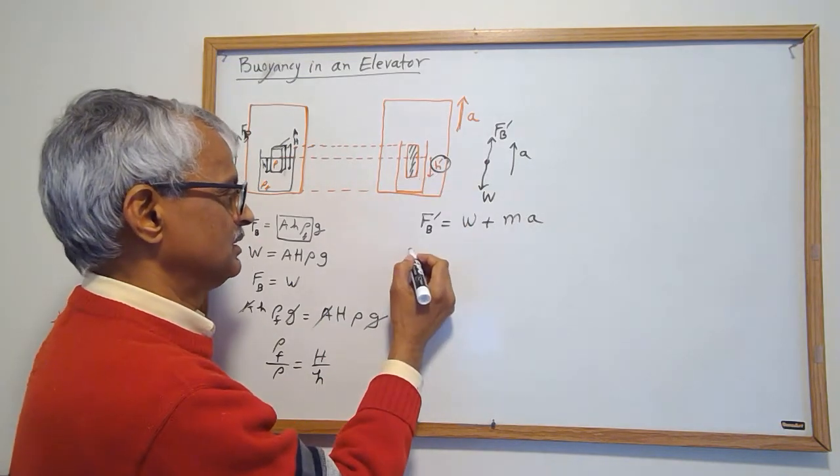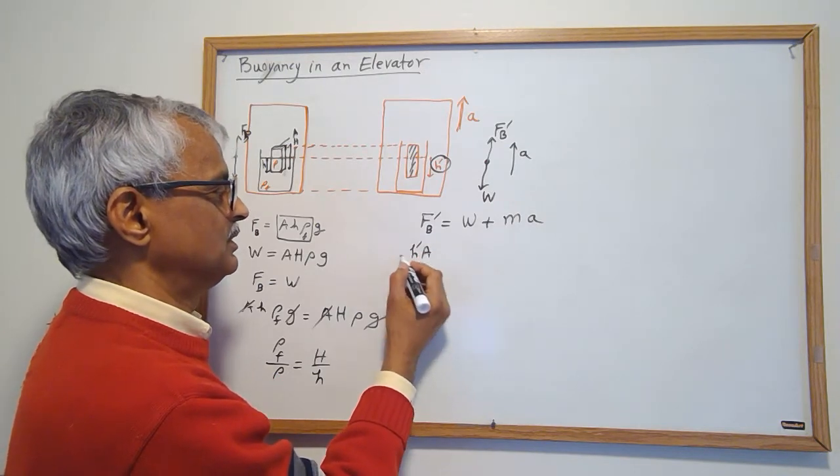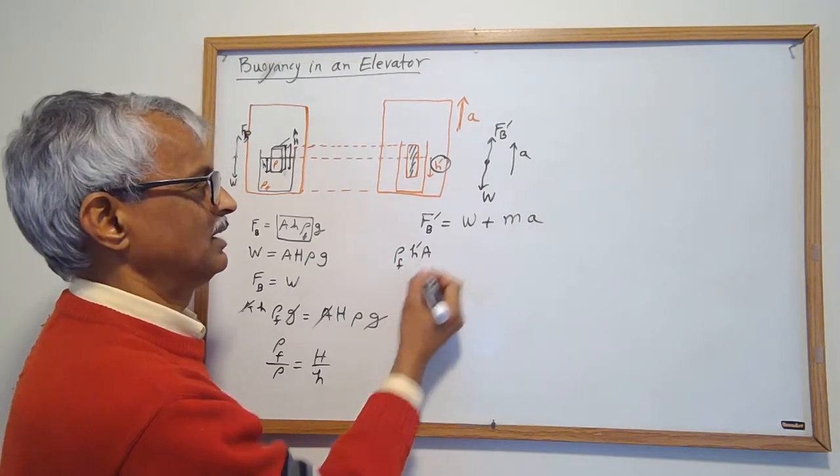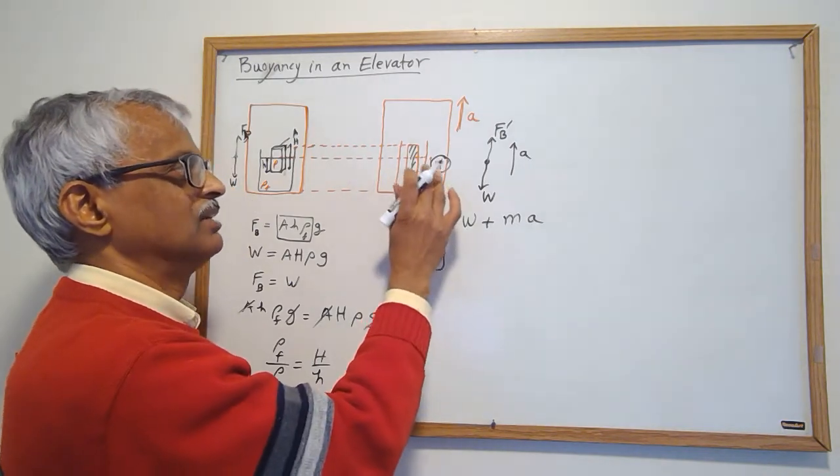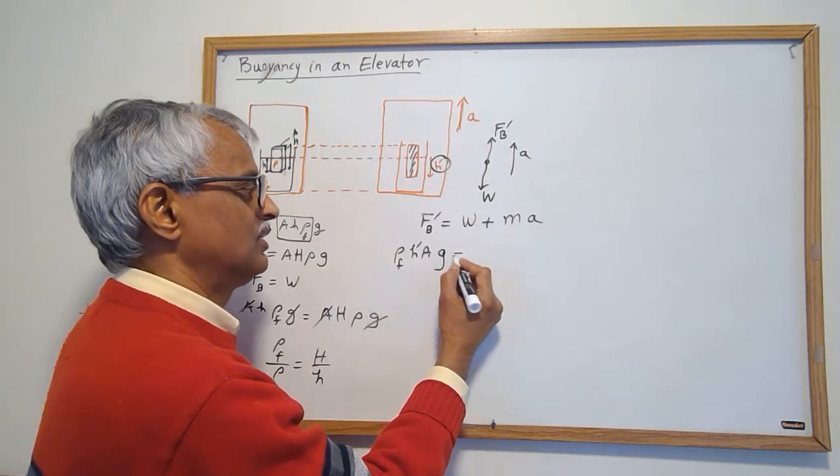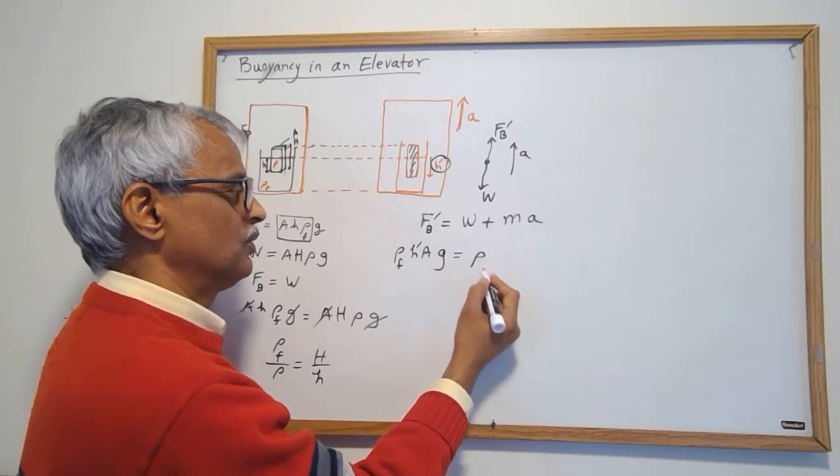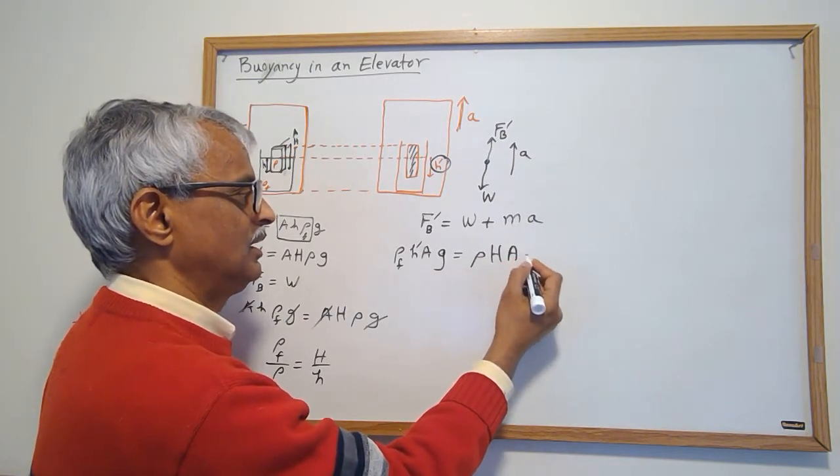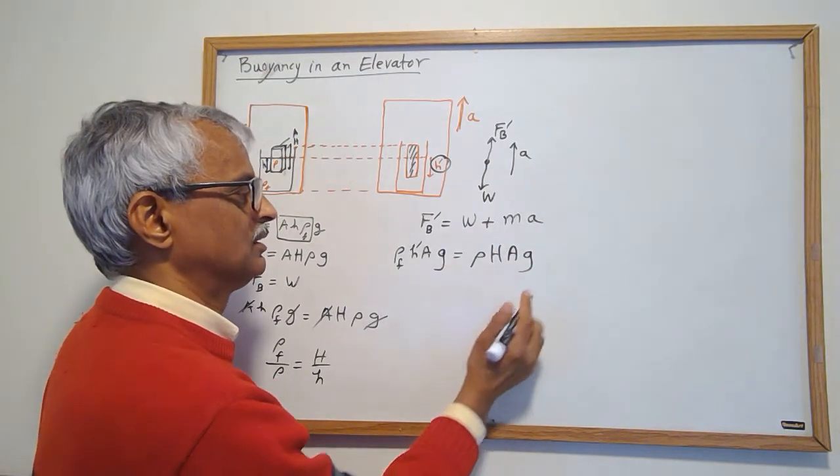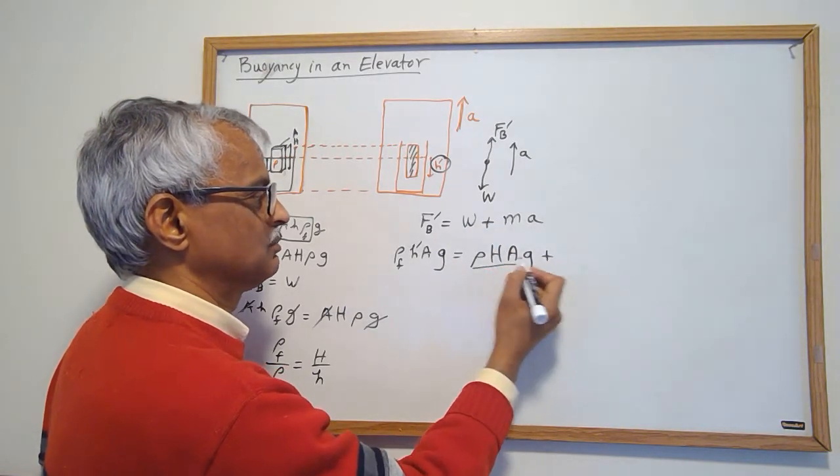So let's write that down using the area and density. This is going to be displaced fluid h prime times A, that's the volume, ρf, that's the mass of this, times g. So that is the buoyancy when it's going up. That should be equal to ρ big H A g, that's the weight, and this much is mass, ρ H A times a.